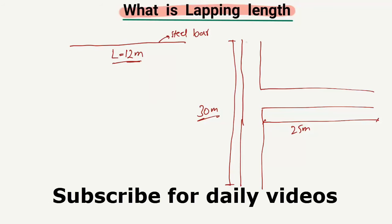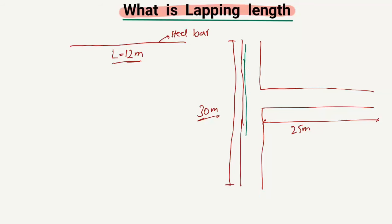If I consider a bar here — this steel bar coming from the top — this is 12 meters. We cannot bring this bar more than 12 meters, while the height of the column is 30 meters. So what we do is provide another steel bar here, and we join these two bars together. The load coming on this bar is now transferred by this lapping length to the next bar.